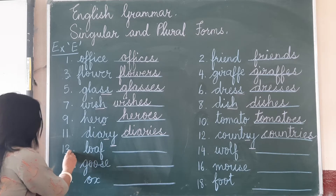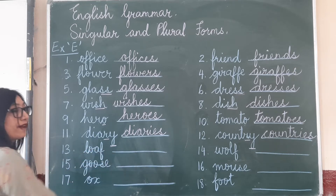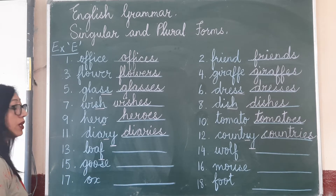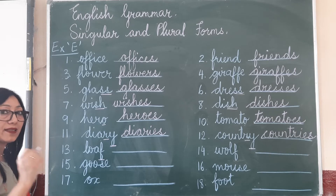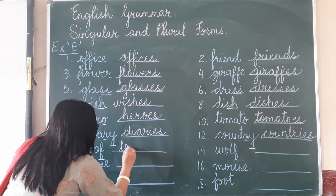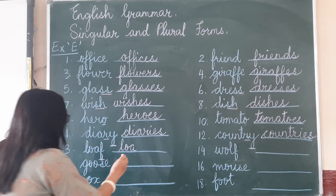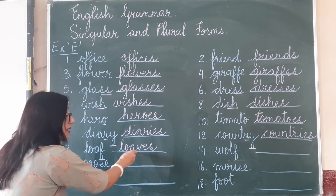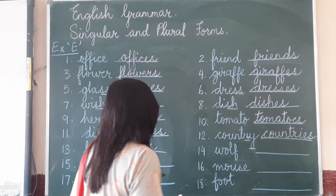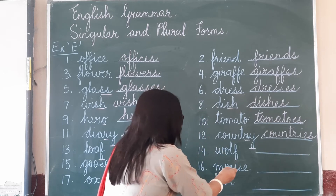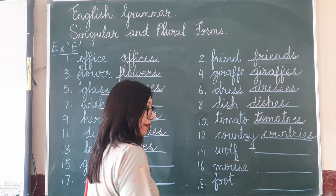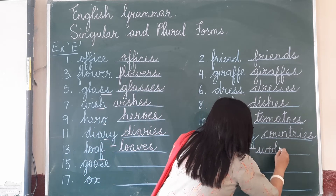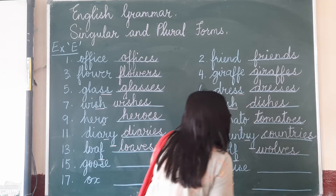Number 13: L-O-A-F, loaf. A noun ending in the letter F — so what do we do? Replace the F with V-E-S. L-O-A, replacing the F with V-E-S: one loaf, many loaves of bread. Number 14, we have 'wolf' — a noun ending in F, replace it with V-E-S: W-O-L-V-E-S, wolves.